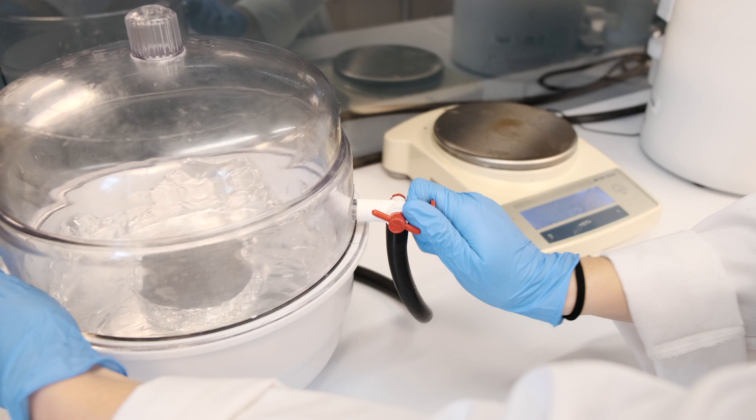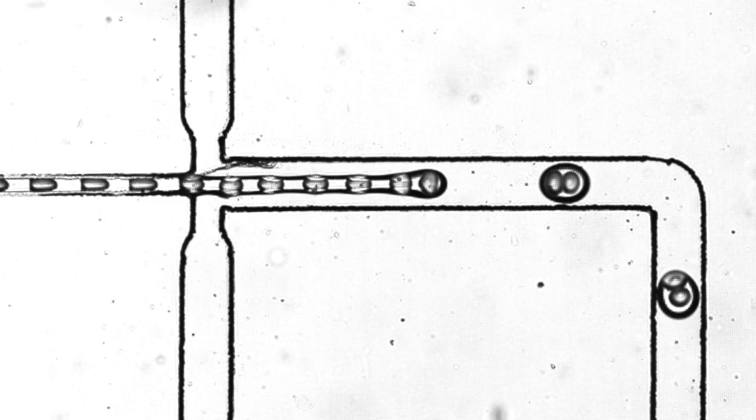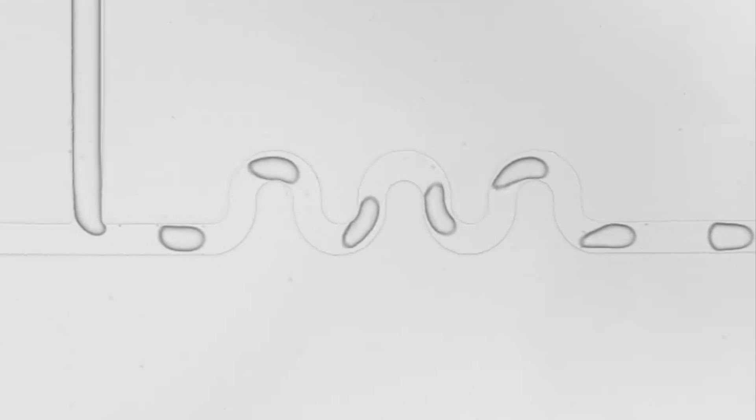One of the things that we do on our microfluidic chips is build droplets. Droplets are like any drop of water, a raindrop, that's a droplet, but we make these on a much smaller scale that you can only see under a microscope. We do that on a chip and at really high throughput, so that means thousands of these droplets per second.